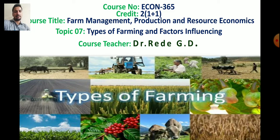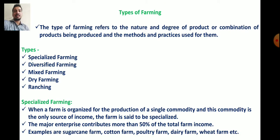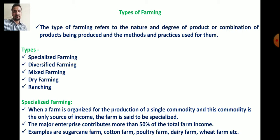The five types of farming are: specialized farming, diversified farming, mixed farming, dry farming, and ranching. The type of farming refers to the nature and degree of product or combination of products being produced, and the methods and practices used for their production.